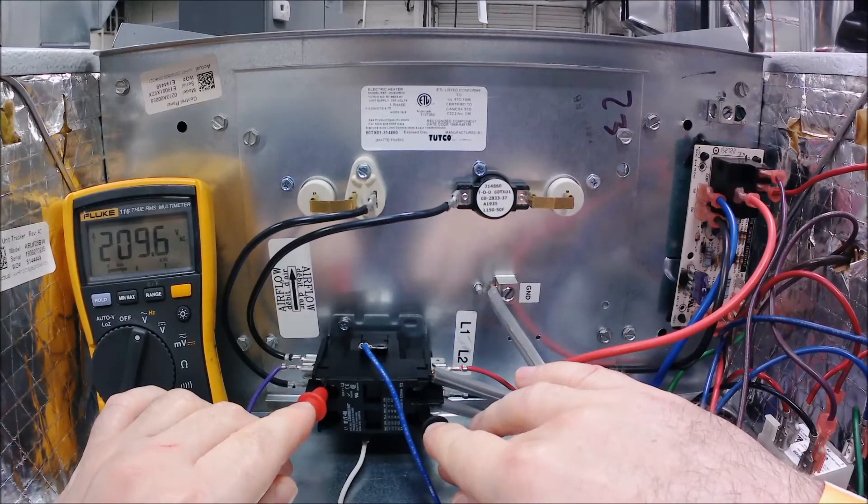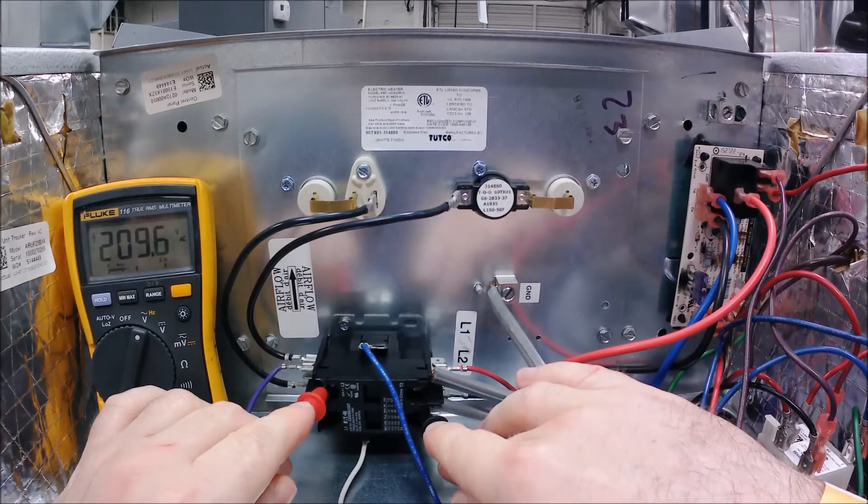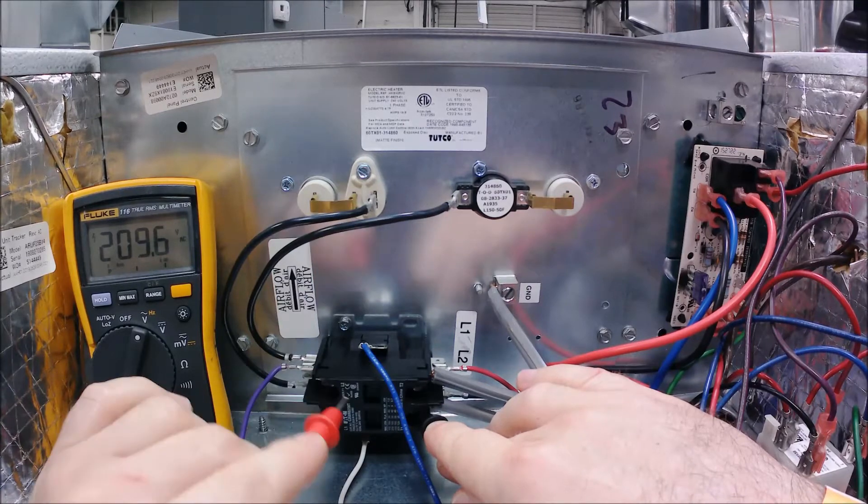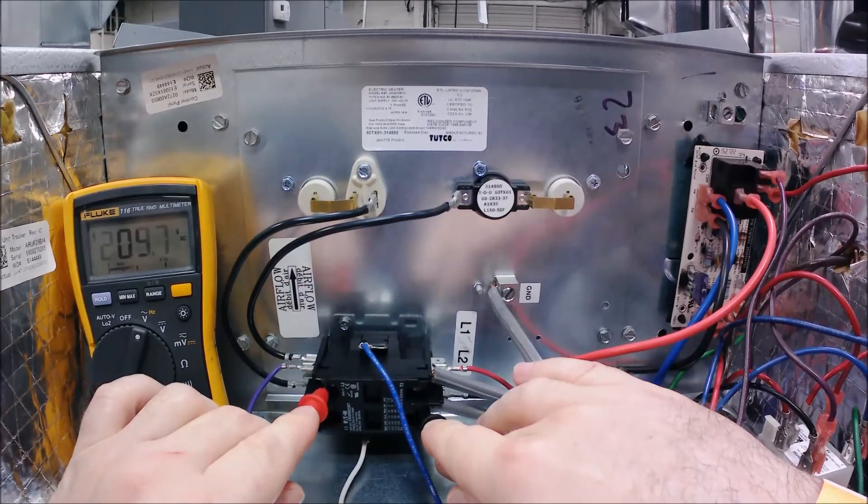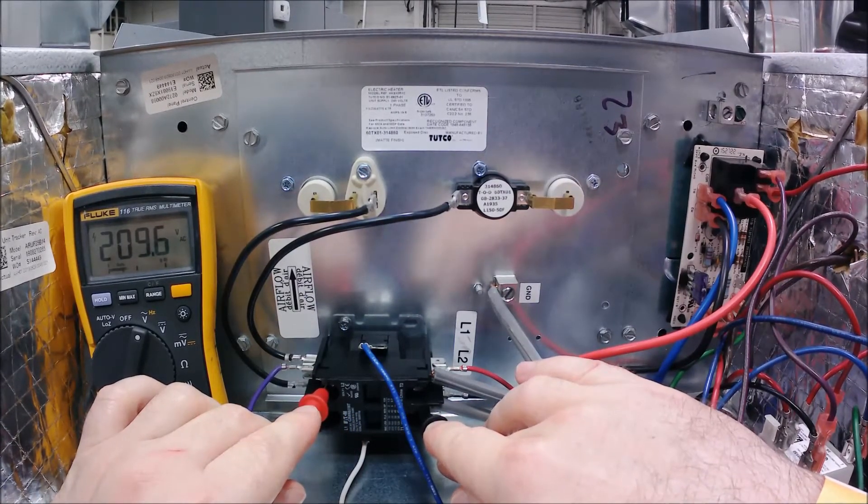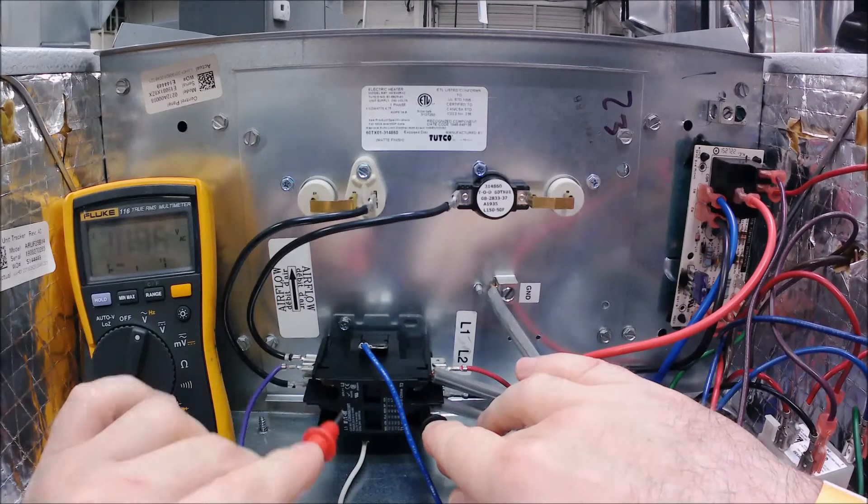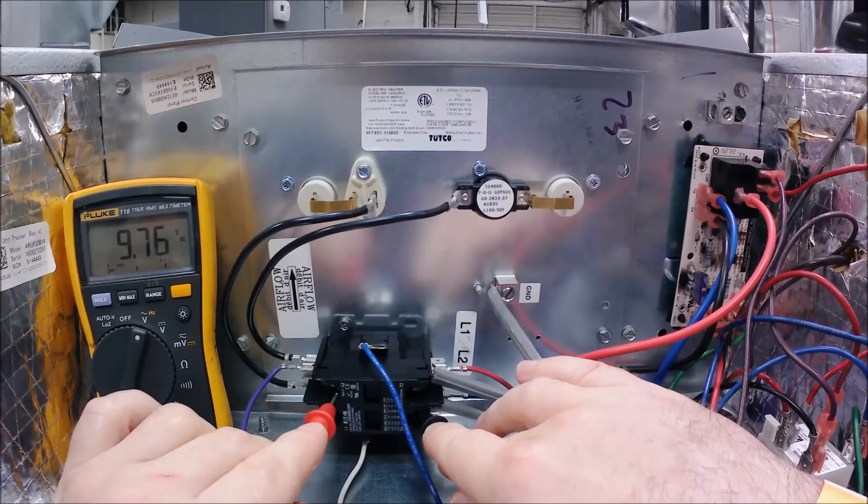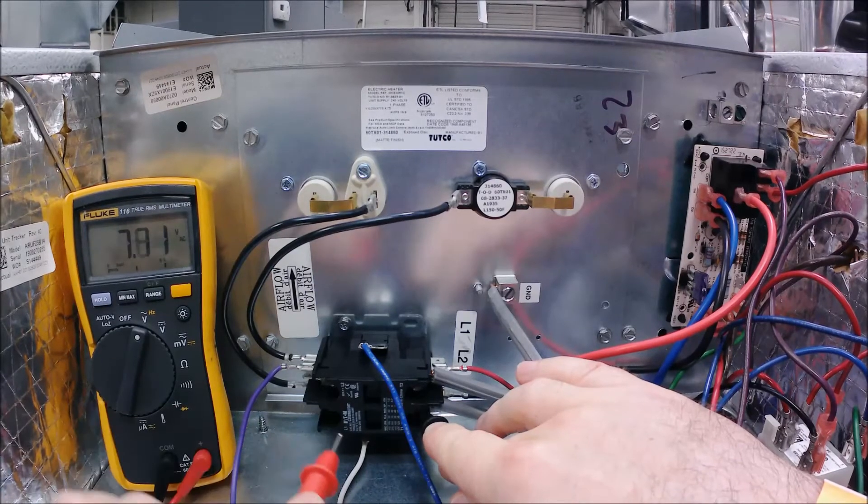And I should get 210 - if the contactor switch is closed, then it should pass all power. So you can see here that I did get that reading. If you're ever in a situation where you got zero, if you have power going in the switch and not power passing through, you know it's safe to say that switch is bad.